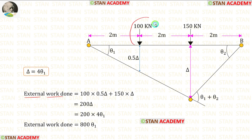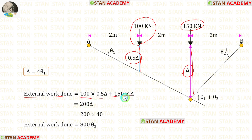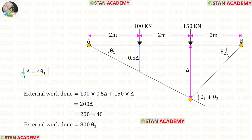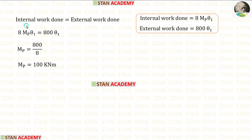We multiply 100 kN with height 0.5 delta, then multiply 150 kN with height delta, and add them to get 200 delta. Substituting delta as 4 theta 1, the external work done equals 800 theta 1. Equating internal and external work done and eliminating theta 1, we get 800 upon 8, giving Mb equal to 100 kN·m.